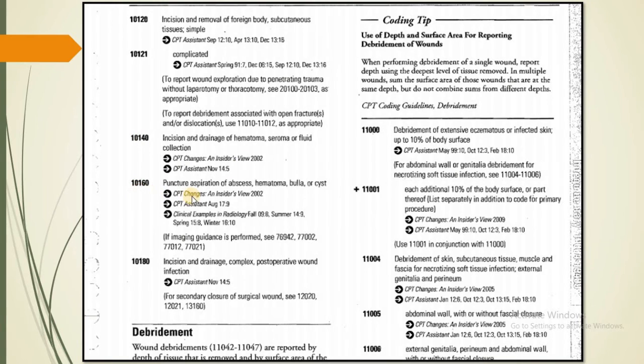Then 10160 is a puncture aspiration of abscess, hematoma, bulla or cyst. So it's also very straightforward code. Then 10180 is a incision and drainage for complex postoperative wound infection.